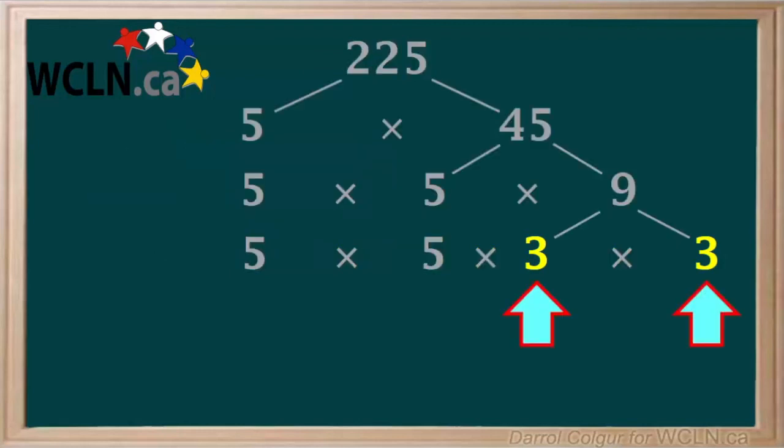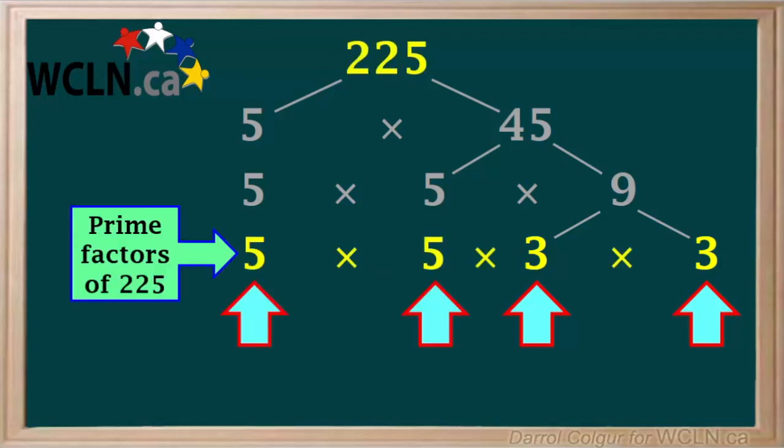3 is a prime number, so these 3s cannot be divided any further. So these numbers, 5, 5, 3, and 3, are the prime factors of 225. We'll move these a bit and tidy up.